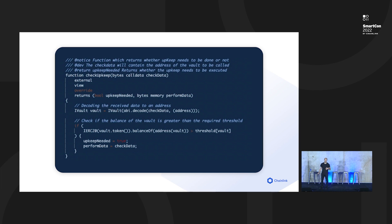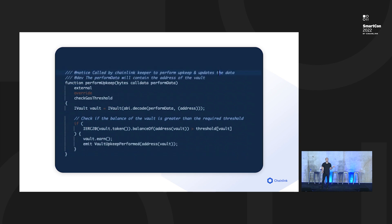They're checking to see if the balance of some vault exceeds a threshold they've set. This is happening every block, constantly checking. When upkeepNeeded equals true, they're returning a value of true, meaning a transaction needs to be sent. The second function is called performUpkeep — this is the transaction they want to send whenever those conditions are true. You can see they're following the best practice to revalidate the condition: only continue when the balance of the vault has exceeded the threshold. Then they call the earn function on the vault. This is the full end-to-end automation.